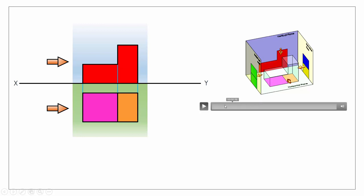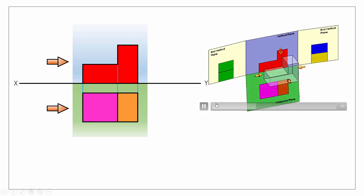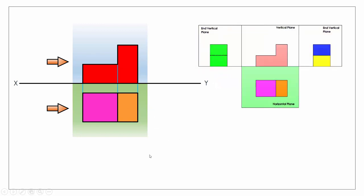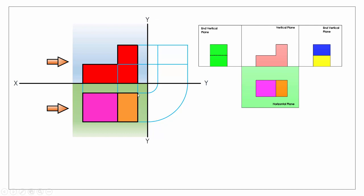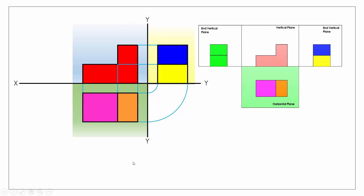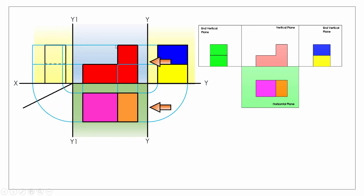If you remember from the last video, when we fold out our planes we represented that in our 2D view by a series of arcs. Putting in the plane on our YY line, we project our image onto the plane in elevation and do the same in our plan view. Then we use our compass to swing these arcs, representing the plane folding out. This transfers the widths from our plan view — the width of our piece and the distance away from the vertical plane — across to our end view.